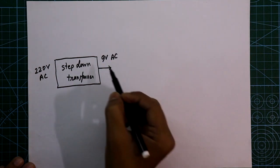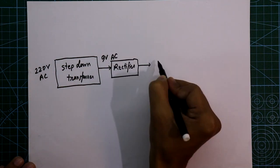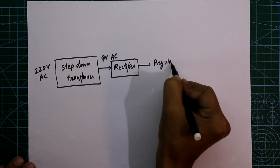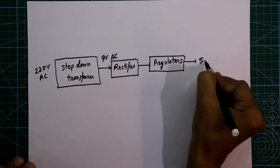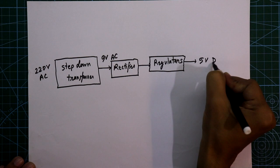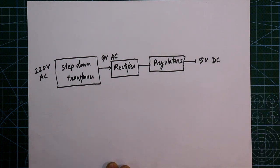After this we need a rectifier circuit and then one regulator. From here we'll get 5 volt DC.